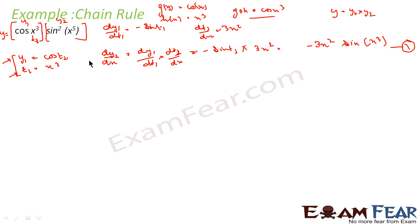Next, let us find the value of dy2/dx. Here also, if you see, this function is also a composite function — because sin²(x⁵) involves sin squared and x to the power 5, both making it composite. So let us write the inner part as t2.